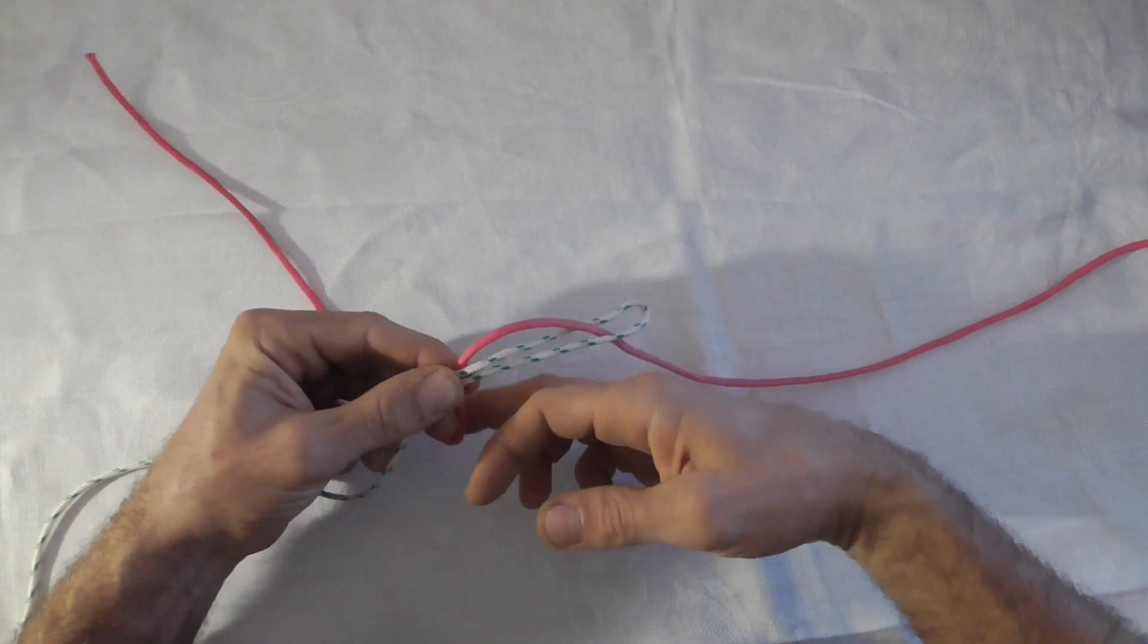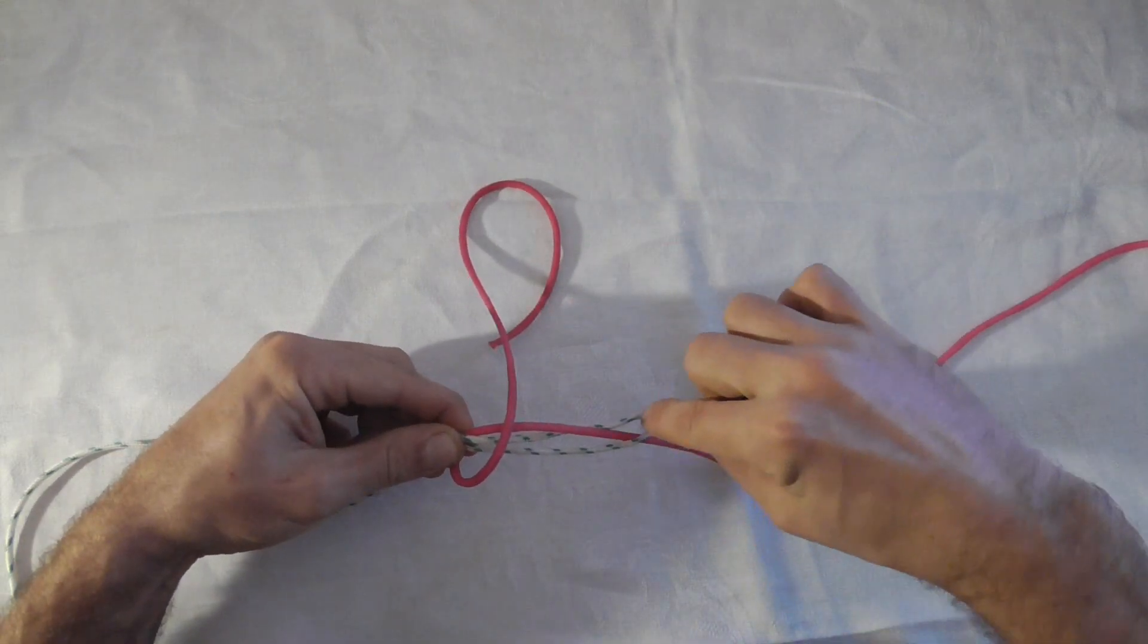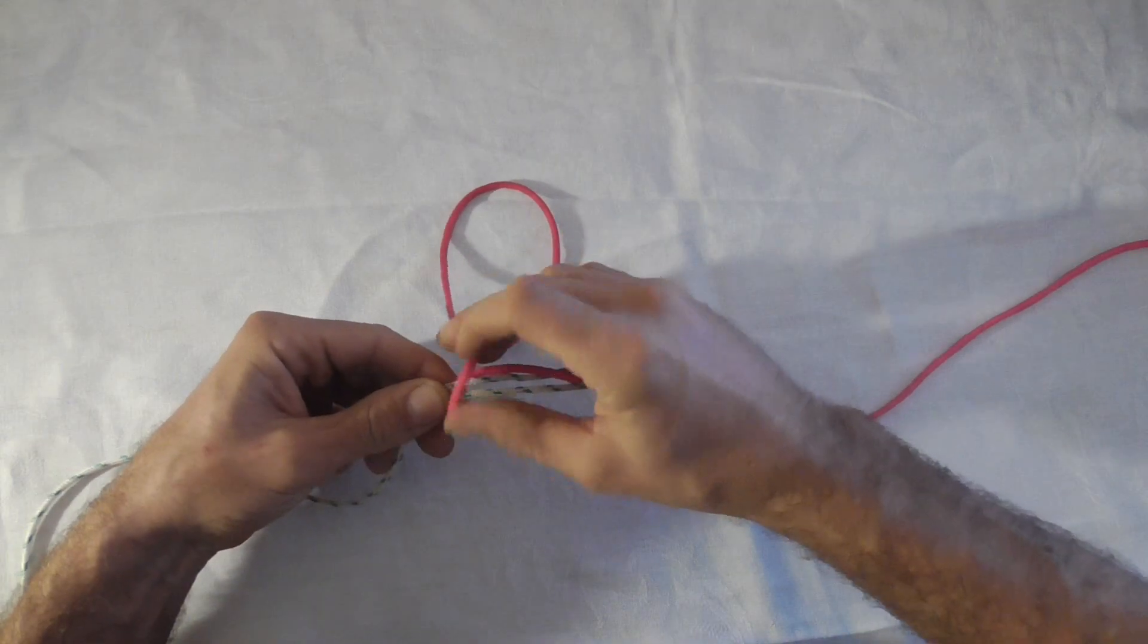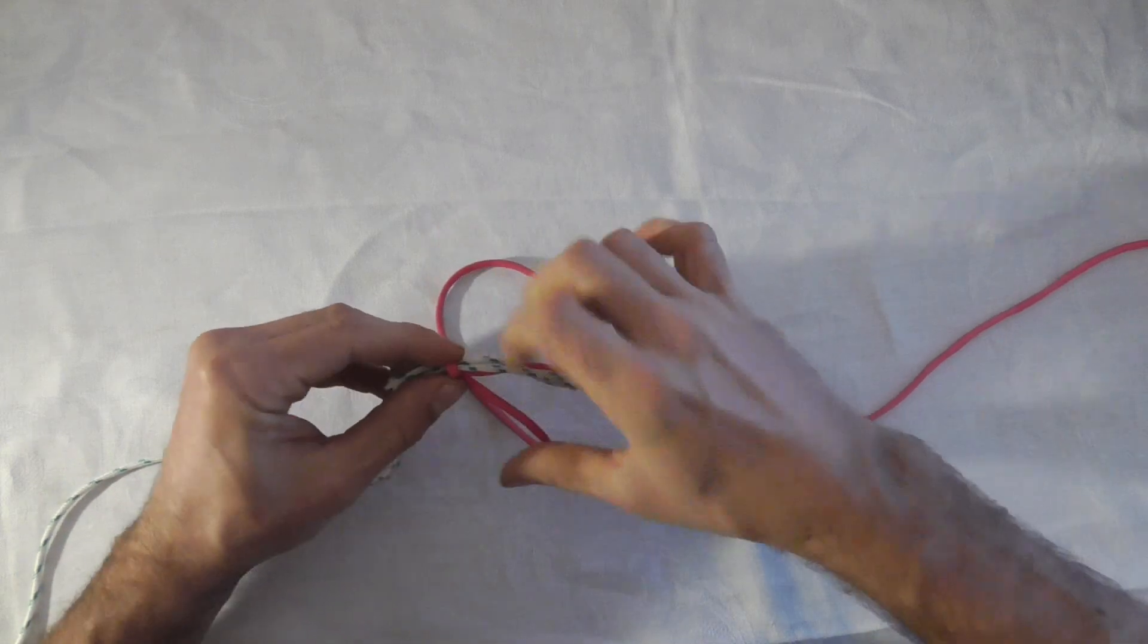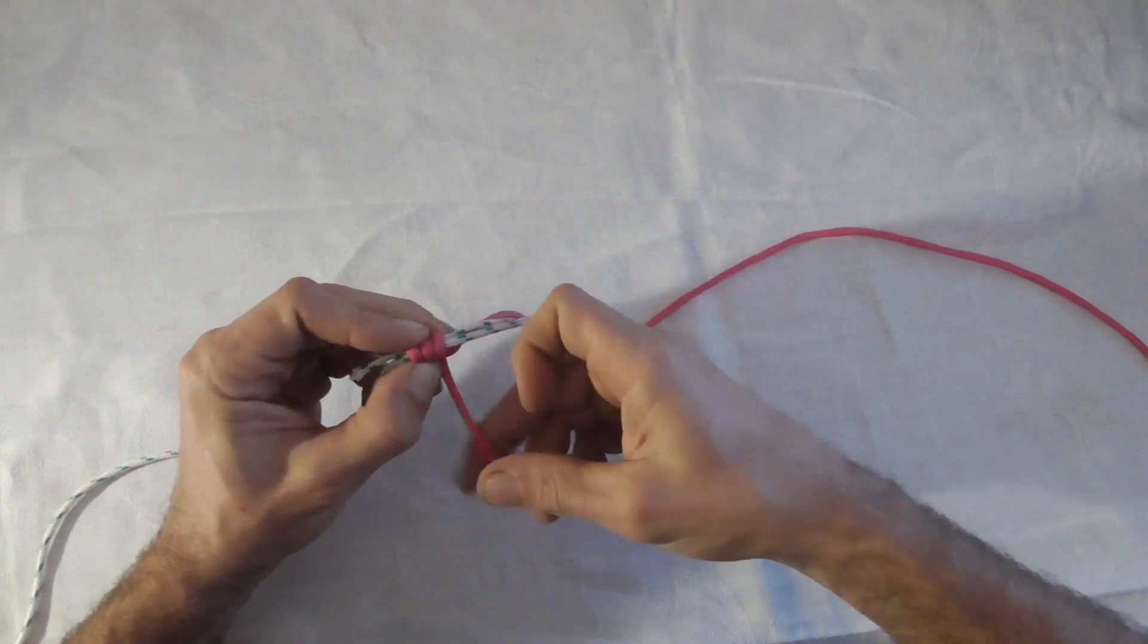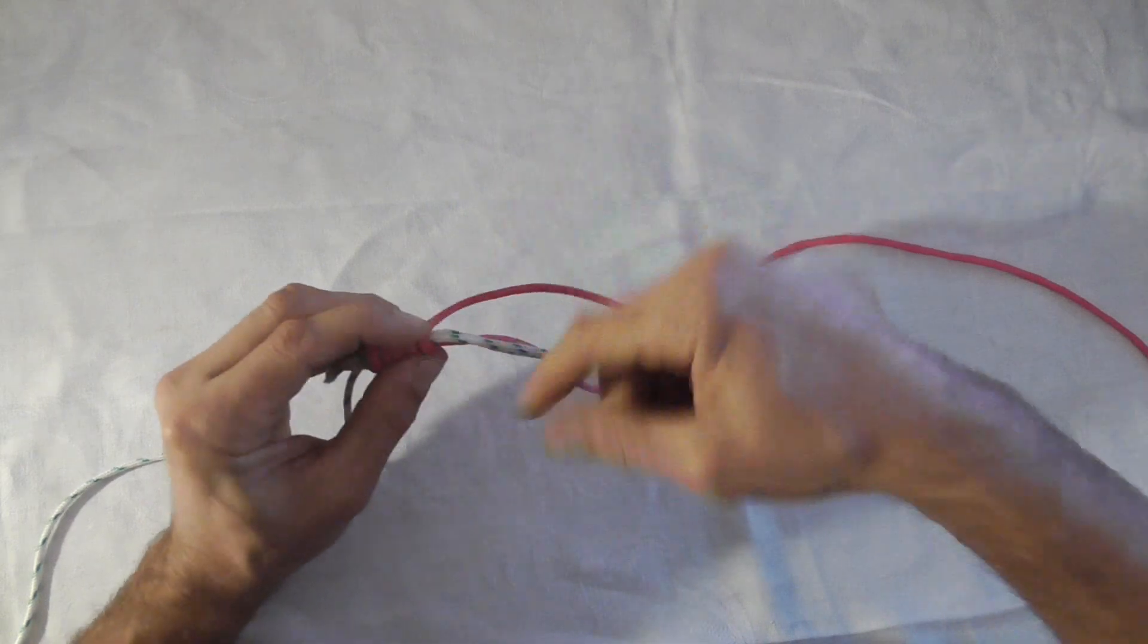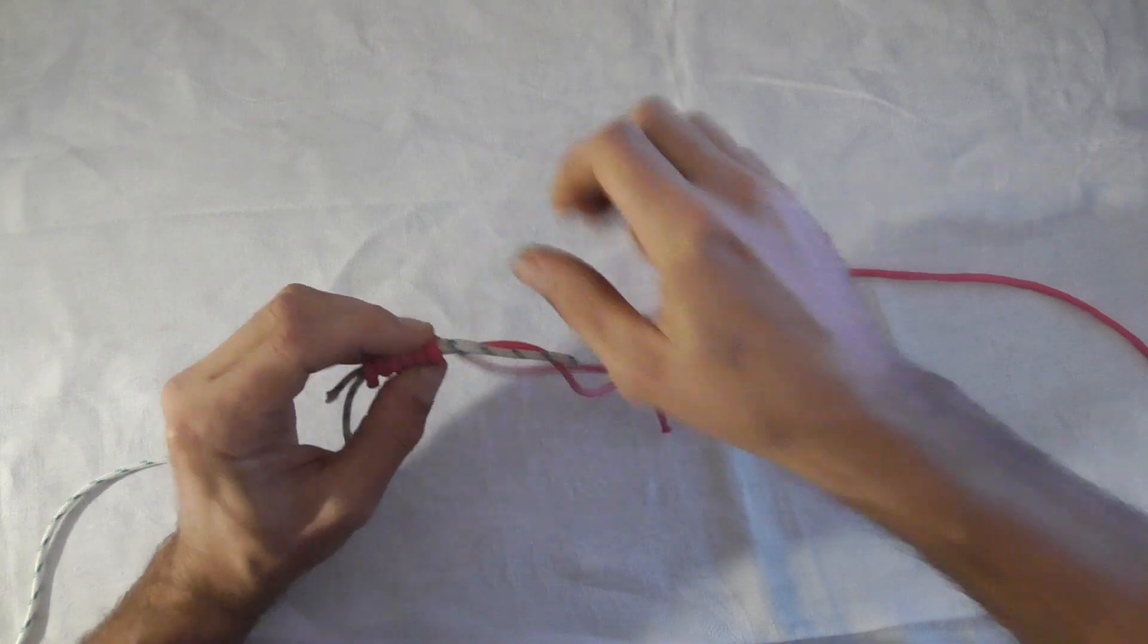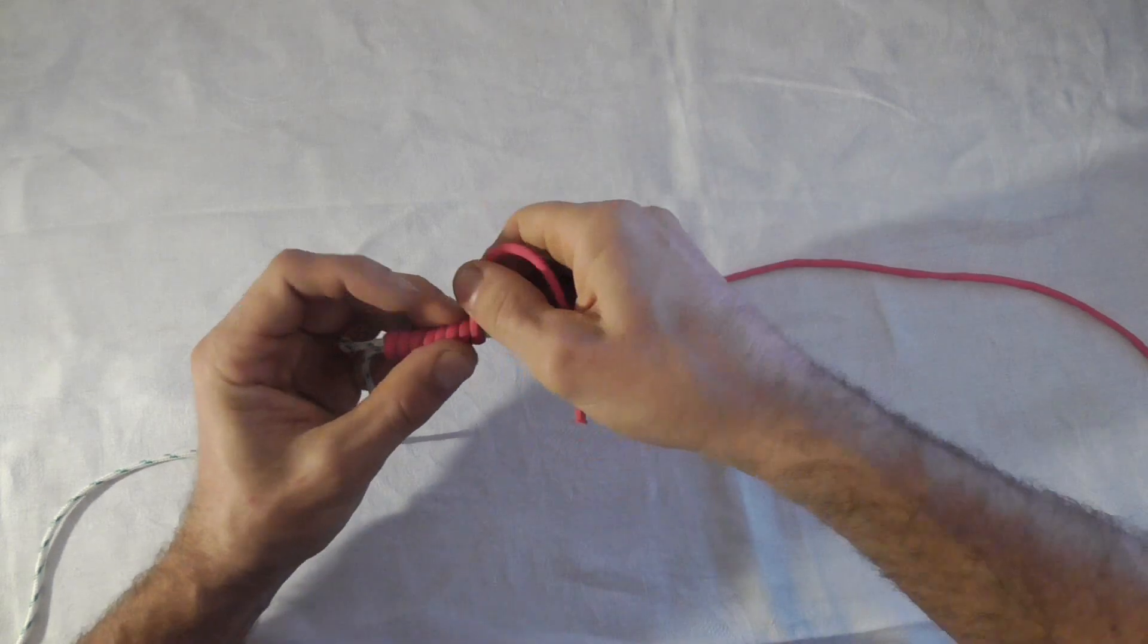So we start up this end and we're going to take our wraps towards that loop. So here we go, that's 1, 2, 3, 4, 5, 6, 7, 8, 9, 10 wraps.